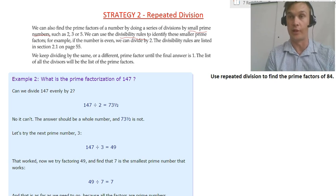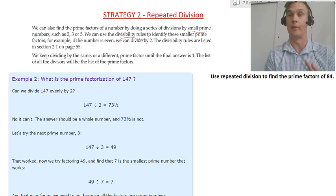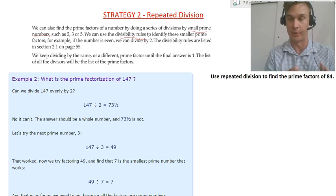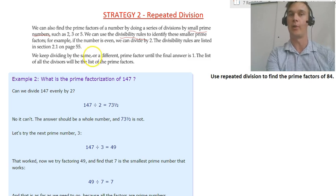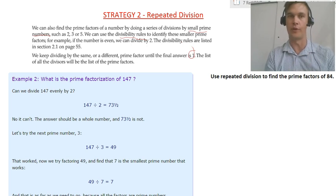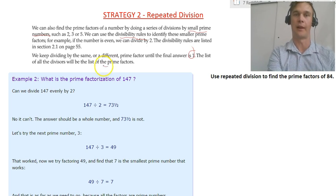For example, if the number is even we know that it's going to be divided by 2, and if you need to revise those divisibility rules make sure you go back to the previous videos and units. So we can keep dividing by the same or different prime factor until the answer is 1. The list of all the divisors will be the list of the prime factors.